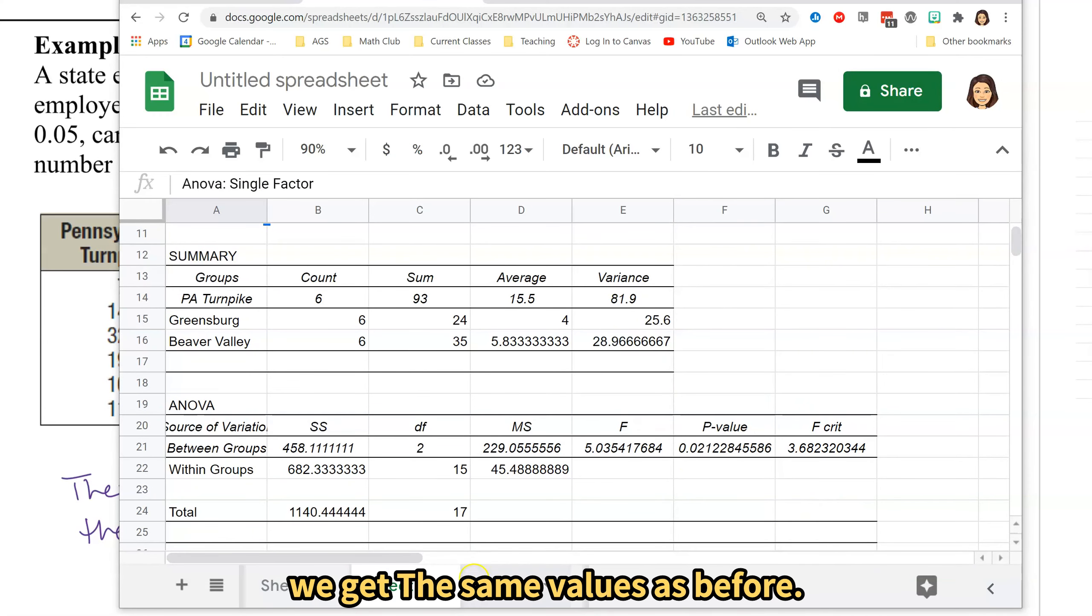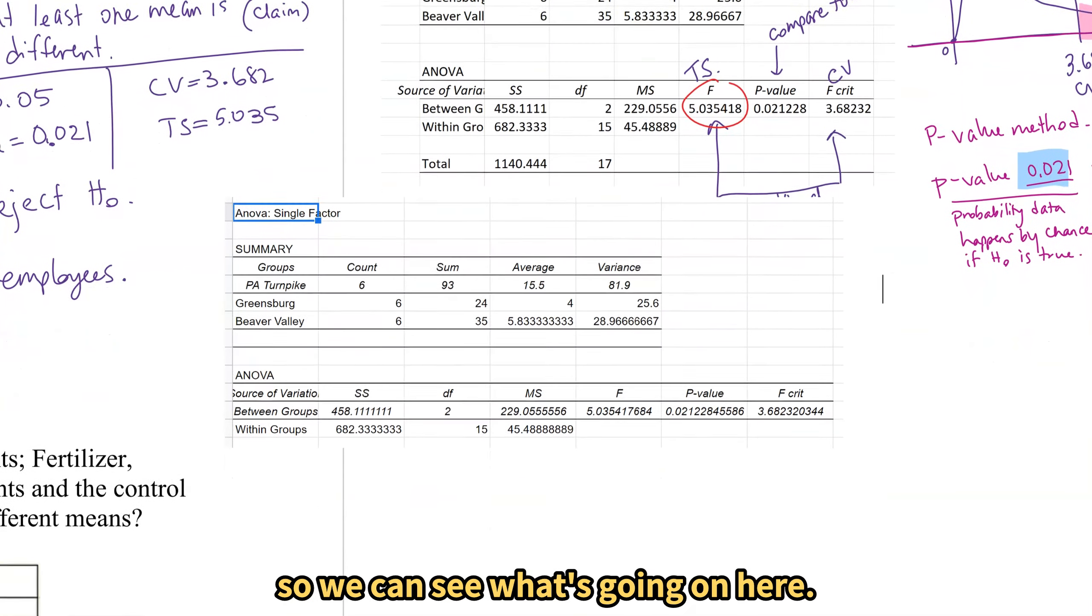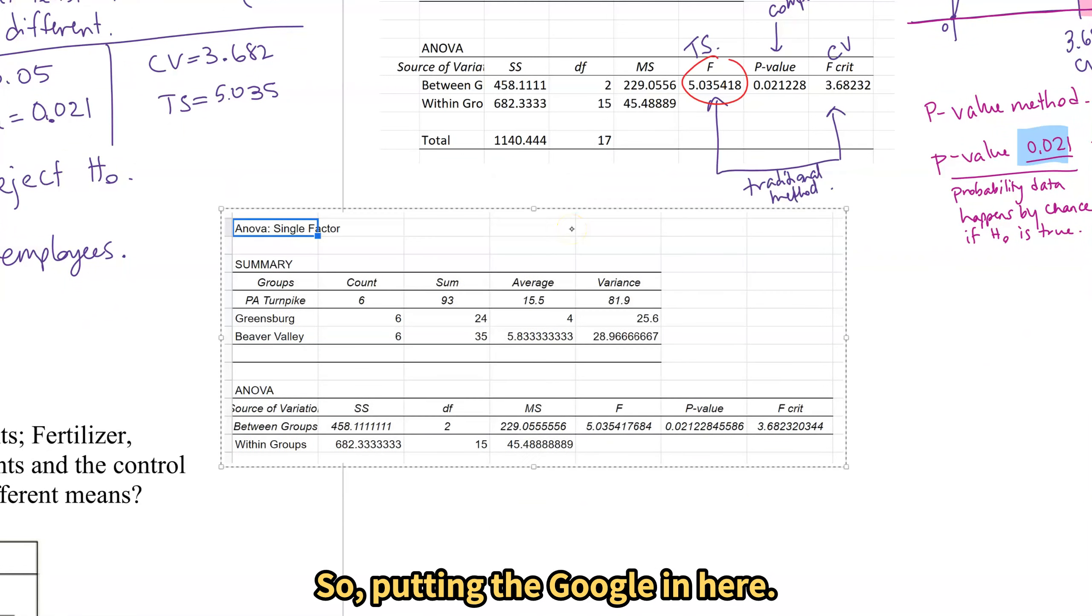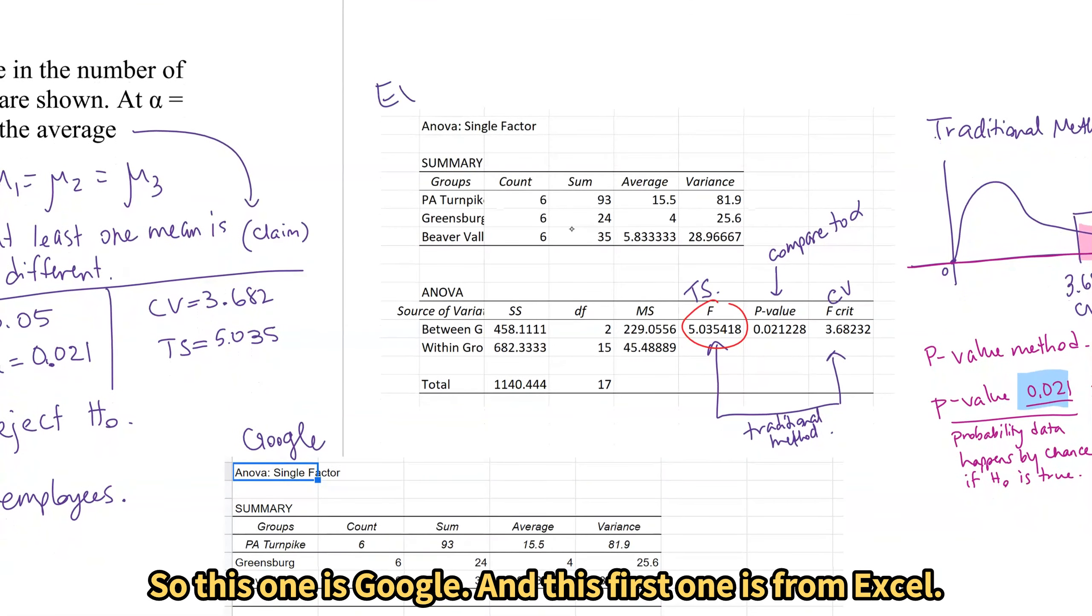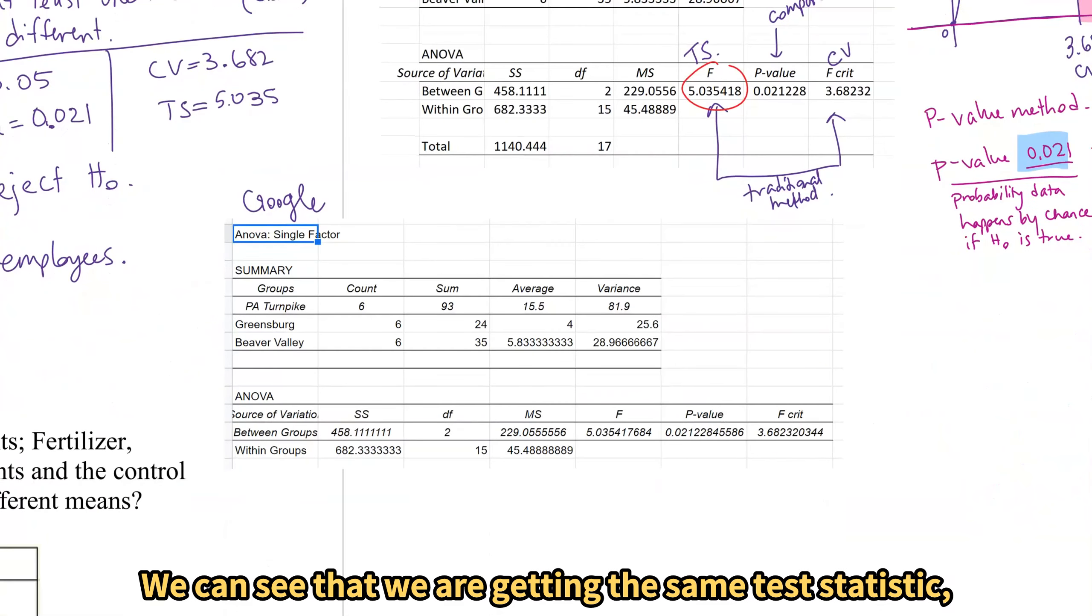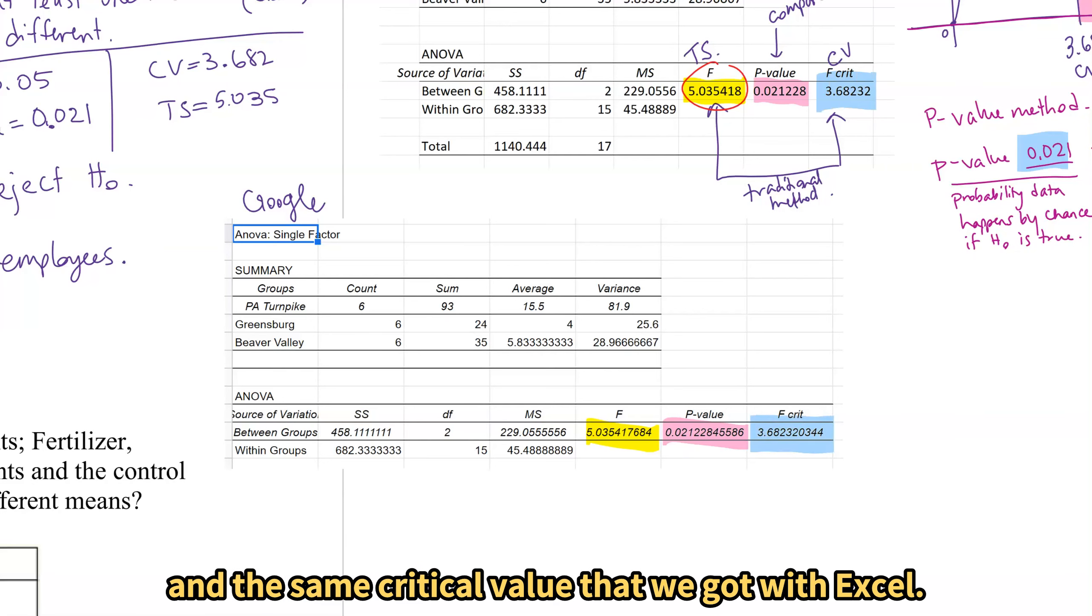And looking at this we get the same values as before. I am just trying to put these in the same area so we can see what is going on here. So putting the Google in here. So this one is Google and this first one is from Excel. We can see that we are getting the same test statistic, the same p-value with a few more digits and the same critical value that we got with Excel.